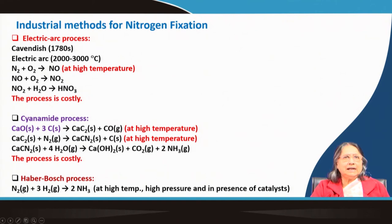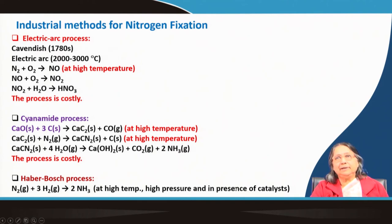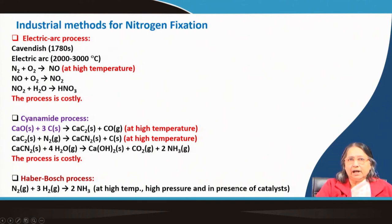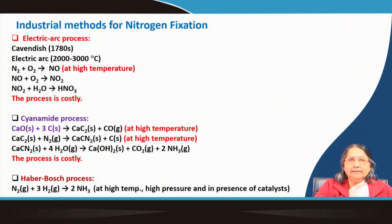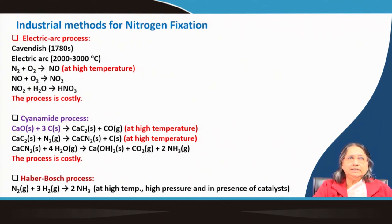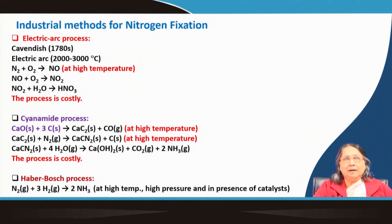The Haber-Bosch process is carried out at very high pressure — 200 atmospheres — and 550°C, in the presence of finely divided iron as catalyst, with molybdenum sometimes used as a promoter. This process is also not energy efficient, but it was so important at the time that Haber-Bosch received the Nobel Prize, as I discussed earlier.